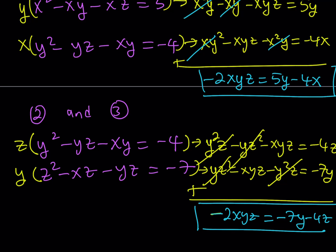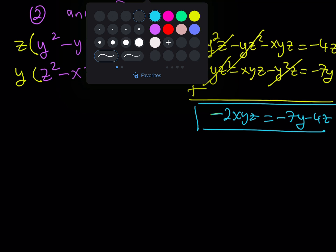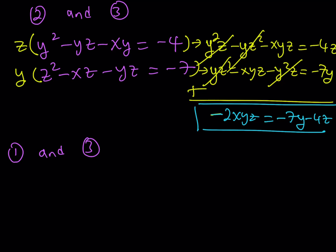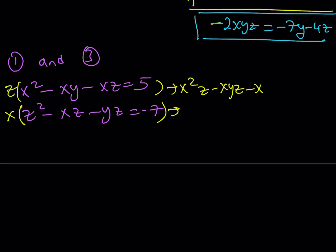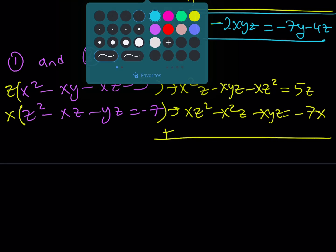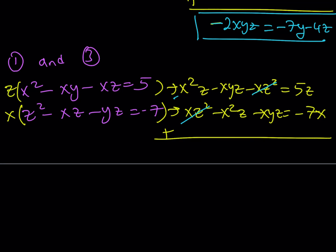The left-hand side is the same — negative 2xyz — but the right-hand side is different. Now let's take equations 1 and 3. The first is x squared minus xy minus xz equals 5, and the third is z squared minus xz minus yz equals negative 7. Multiplying the first by z and the second by x, we get x squared z minus xyz minus xz squared equals 5z, and xz squared minus x squared z minus xyz equals negative 7x. Adding these, xz squared and x squared z cancel, giving negative 2xyz equals 5z minus 7x.